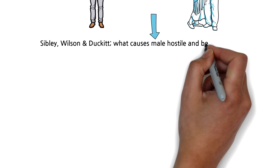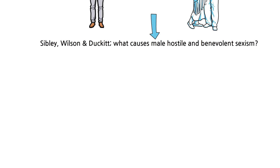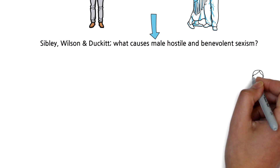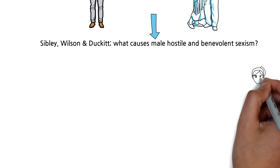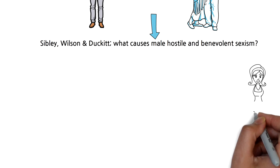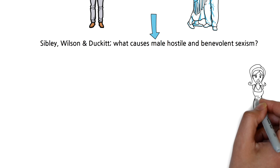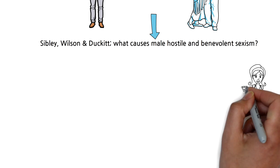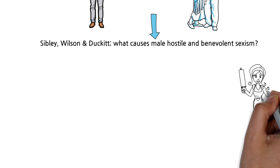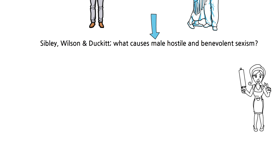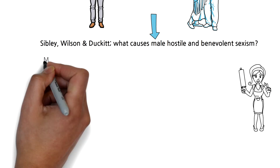Sibley, Wilson and Duckett went on to examine how different types of male hostility and benevolent sexism have a role within the dual roles of social dominance orientation and right-wing authoritarianism.